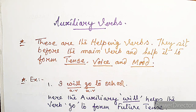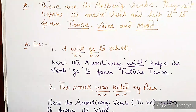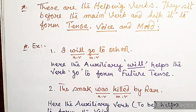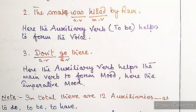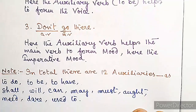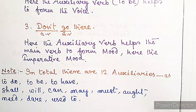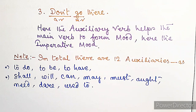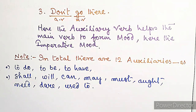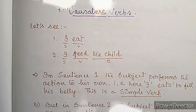Auxiliary verbs are helping verbs. They sit before the main verb and help it to form tense, voice, and mood. For example, 'I will go to school' — 'will' helps 'go' form the future tense. 'The snake was killed by Ram' — the auxiliary 'to be' helps form the voice. 'Don't go there' — the auxiliary helps form the imperative mood. In total there are 12 auxiliaries: to do, to be, to have, shall, will, can, may, must, ought, need, dare, and used to.